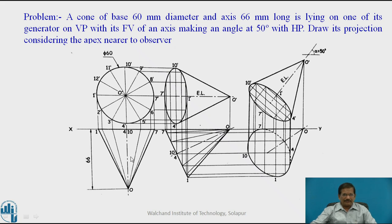For redrawing, divide the circle into 12 equal parts, project those points downwards, and name them accordingly. So it is divided into 12 parts, 1 to 12: 1, then 2 and 12, 11 and 3, 4 and 10, 5 and 9, 6 and 8, and 7.